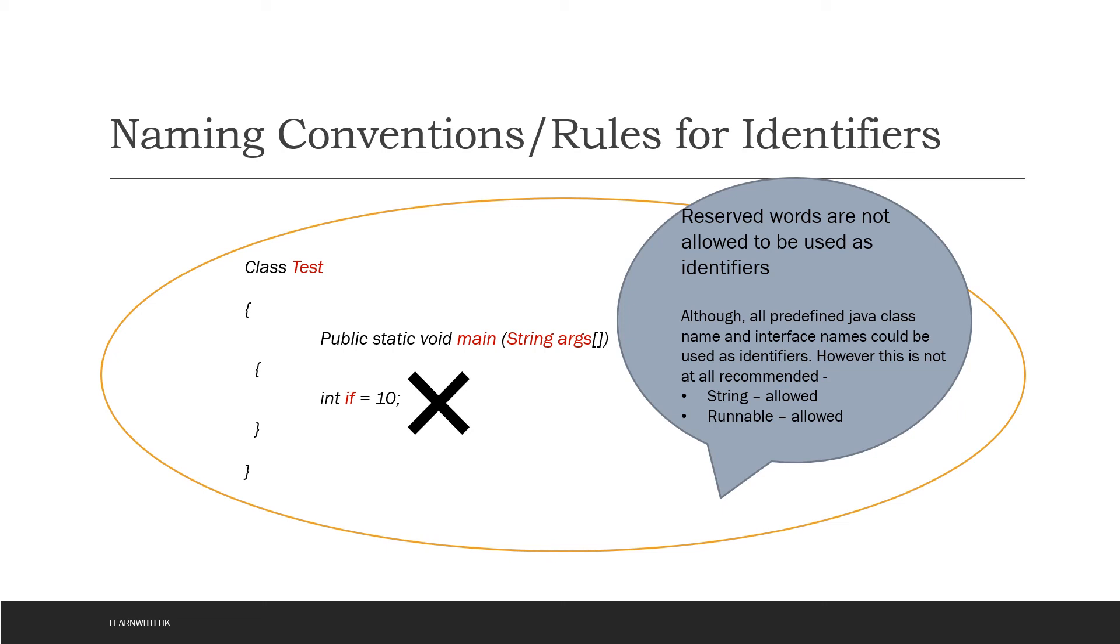But you can use the predefined class name and interface names as identifiers. For example, string is nothing but a class name, runnable is an interface name. You can definitely use int string equals 10, int runnable equals 10, which is allowed. There will be no errors in Java.